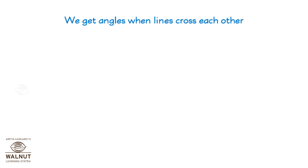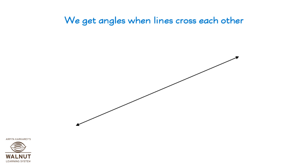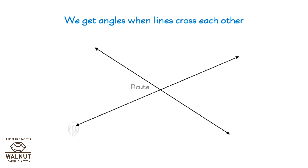When two lines cross each other, they make an angle. What angles are formed here? Acute. Obtuse. Acute. Obtuse.